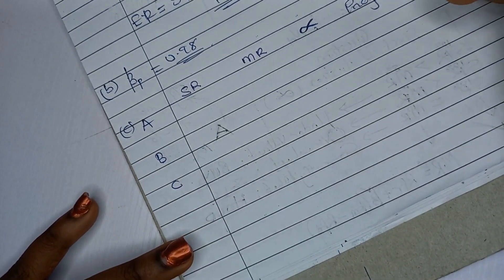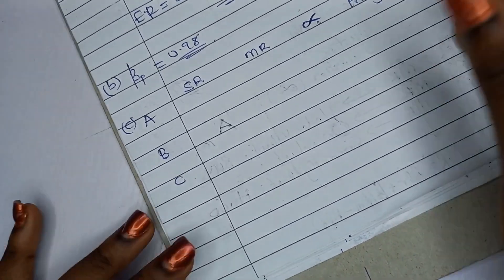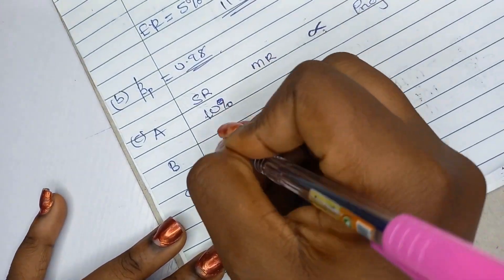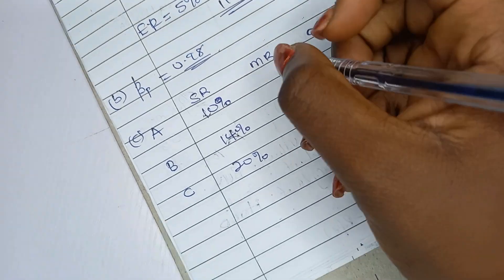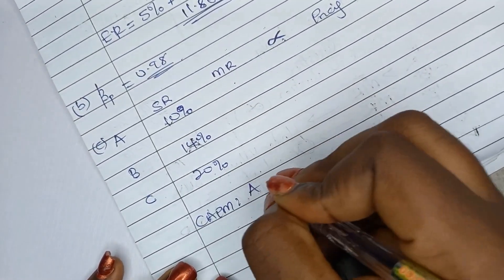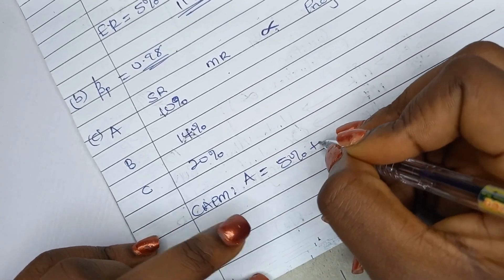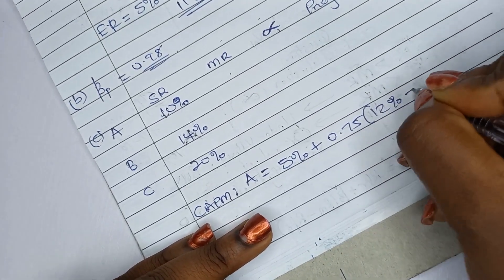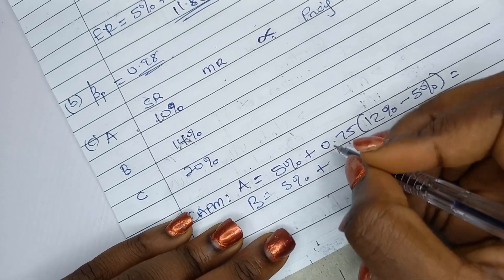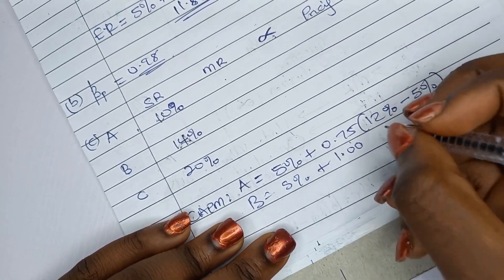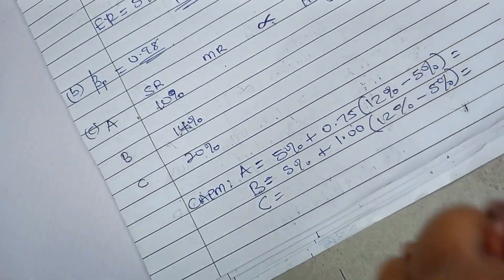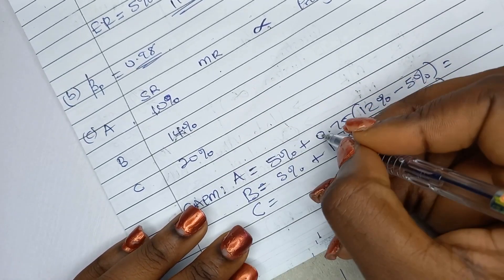The stock returns are given: 10% for A, 14% for B, and 20% for C. Now calculate the market return for each using CAPM. For A: 5% plus 0.75 times (12% minus 5%) equals 10.25%. For B: 5% plus 1.00 times (12% minus 5%) equals 12%. When beta equals 1, the stock moves with the market, so it earns the market return of 12%.